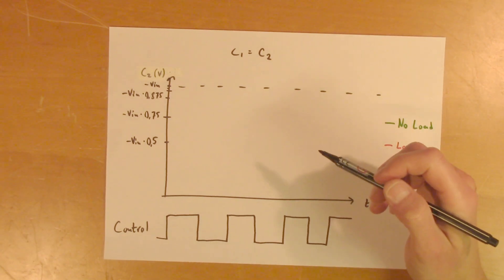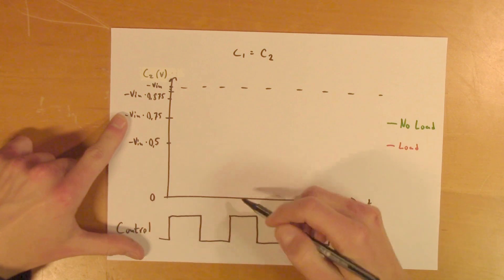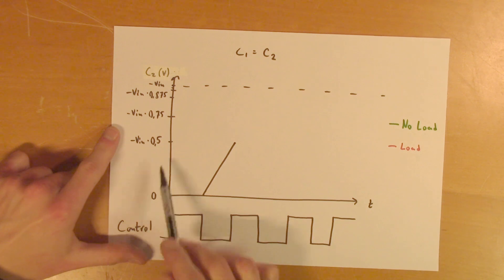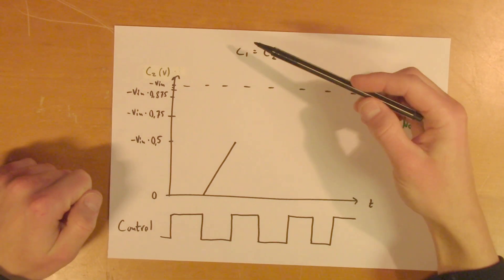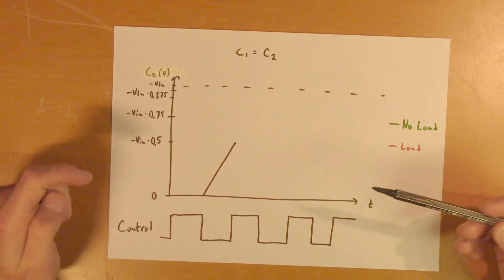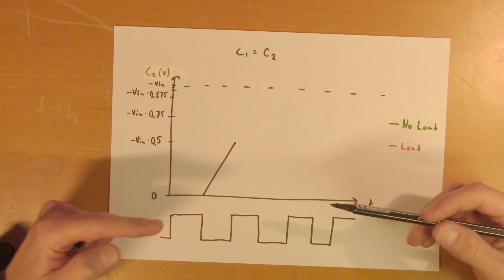So in the first cycle, it will rise from 0 volts to negative half the input voltage. Because if the capacitance is equal for C1 and C2, in the first cycle, when the transfer has occurred, they will have equal amount of charge, and will therefore be at the same voltage.